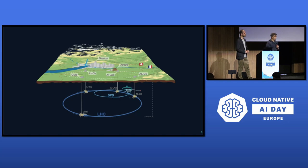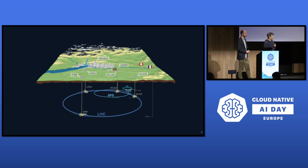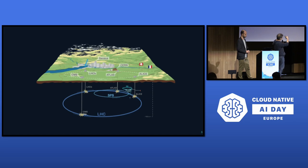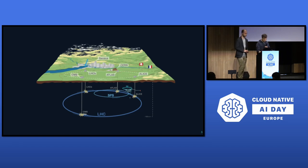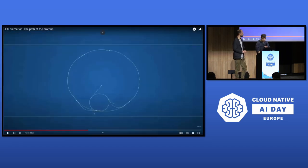I'll start by giving a very brief overview of what CERN is. It's the European Organization for Particle Physics. It's been there for several decades and our flagship project is the Large Hadron Collider, which is a very large particle accelerator that has 27 kilometers in perimeter and is 100 meters underground. We accelerate protons to very close to the speed of light and make them collide at specific points where we built these experiments.